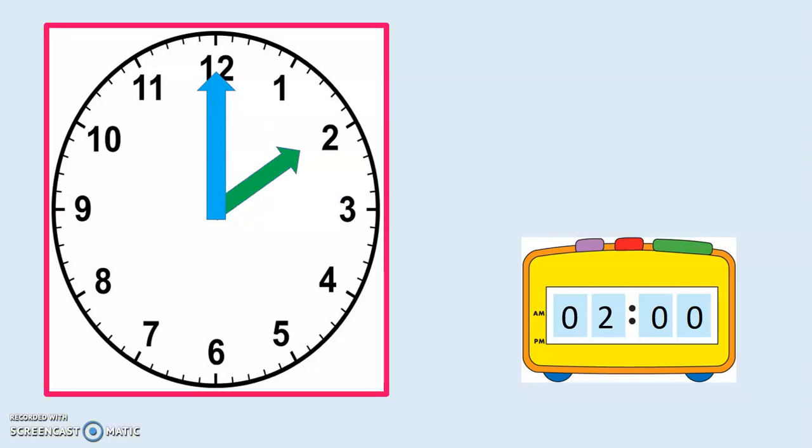The long hand is on 12 and the short hand is on the 2 — the time is 2 o'clock. The digital time is 02:00 in the morning. In the afternoon the digital time would be 14:00.